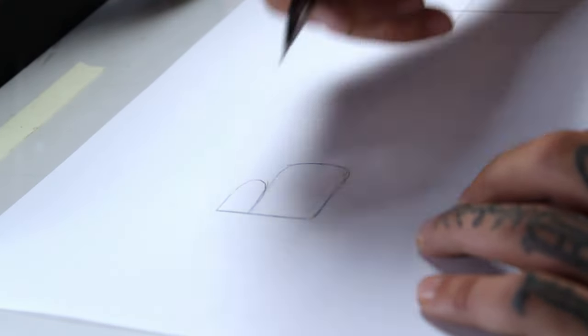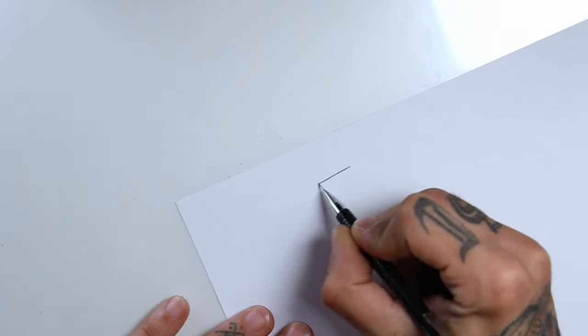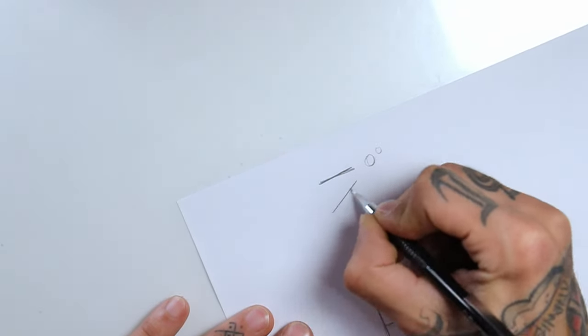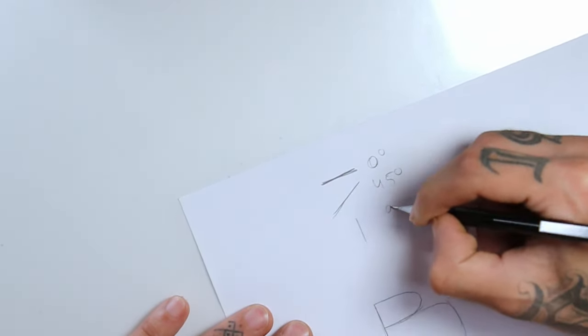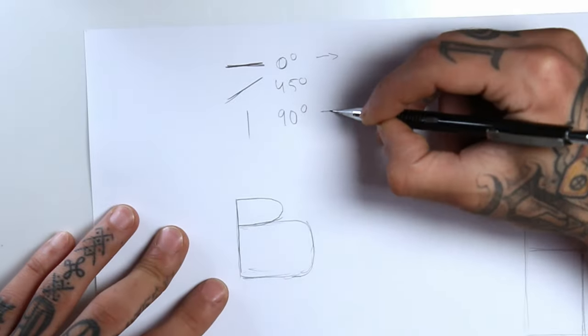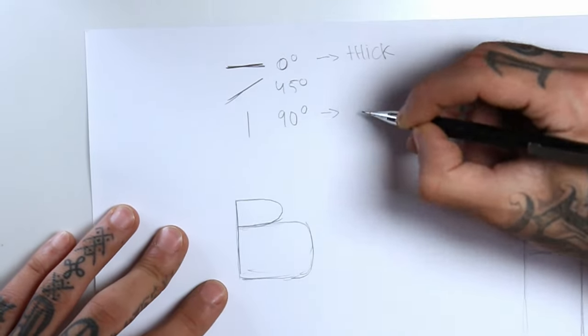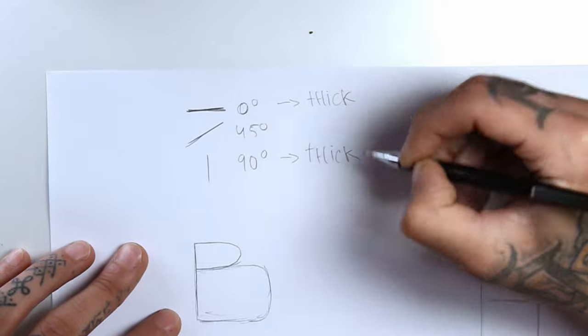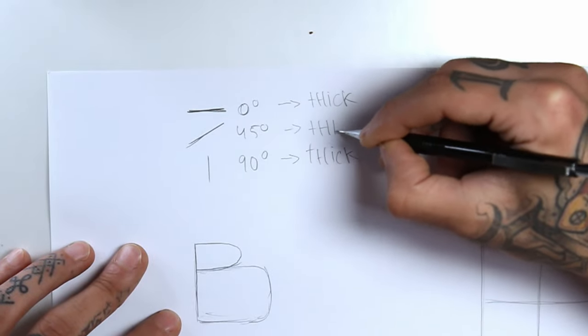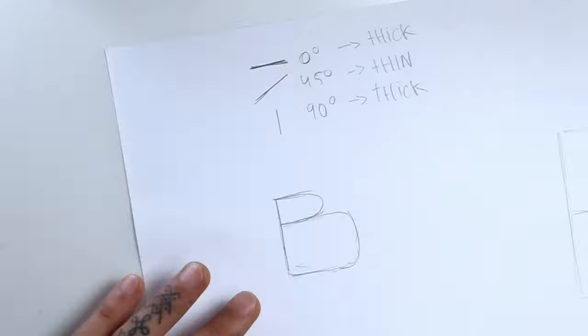And for this style we're going to draw within three angles: zero degrees, 45 degrees, and 90 degrees. This will make more sense later, but we're going to use the zero degree and 90 degree angles with thicker lines and the 45 degree angle with thinner lines.